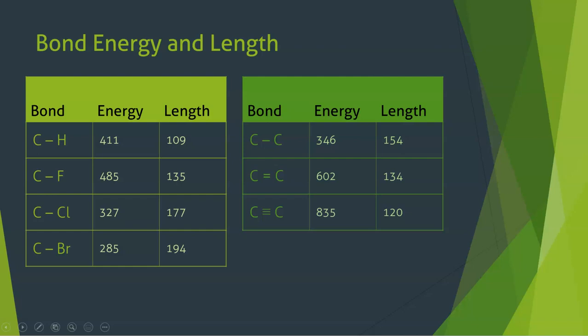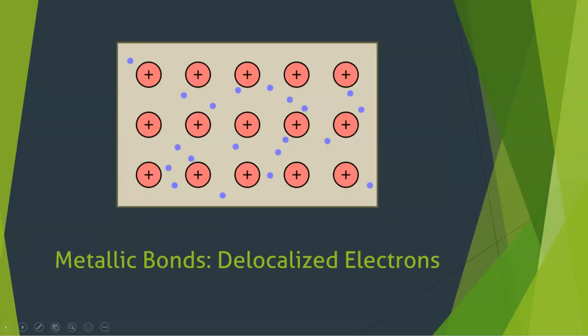The last type of bonding that I want to talk about is metallic bonding. Ionic bonds generally form between a metal and a non-metal. They can happen with just non-metals as long as there are ions involved. Covalent bonds really only happen when we have non-metals. That sort of raises the question of what happens when we just have metal atoms. The answer to that is we get what we call a sea of electrons.